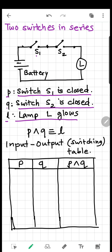Suppose P and Q are both true — P is true and Q is true. This means switch S1 is closed and switch S2 is closed. Now if both of them are closed, current will flow. So lamp L will glow — that means lamp glow L is true. So L is P AND Q, meaning P AND Q gives us L. This is true.